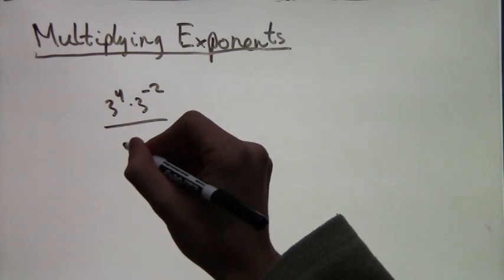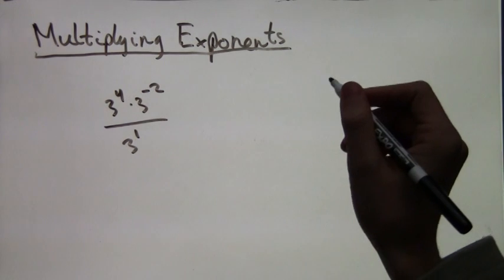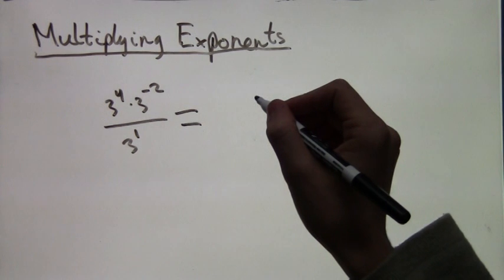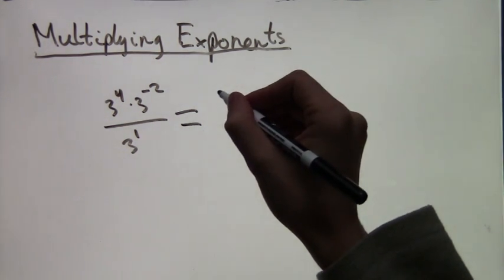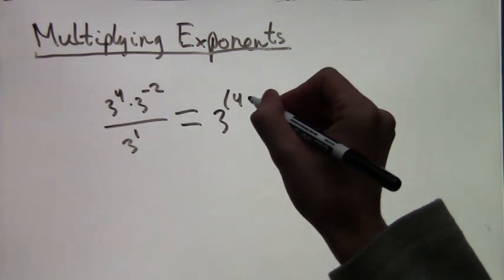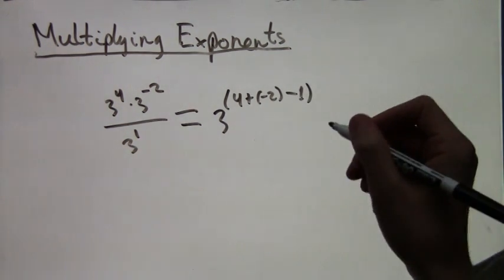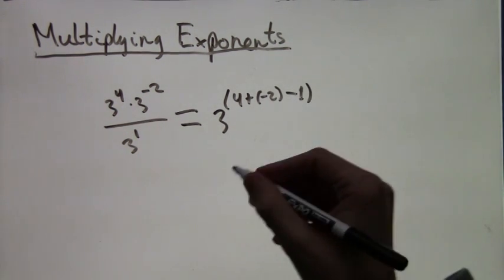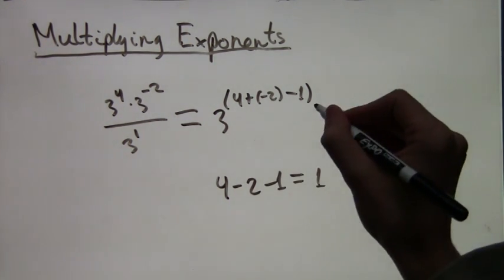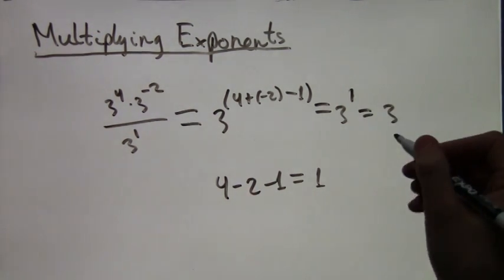Now let's do a compound example that tests everything together. On the bottom we just have 3, but remember that 3 is the same as 3 to the 1. So we have a 4 and a negative 2 on top, so we add them, and we have a 1 on the bottom so we subtract it. We get 4 plus negative 2 minus 1, which simplifies to 1. So we get 3 to the 1, or in other words 3.